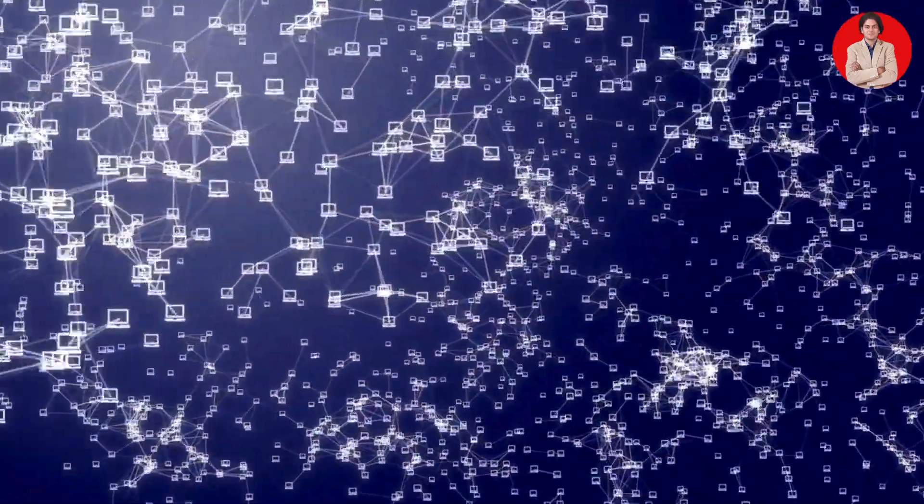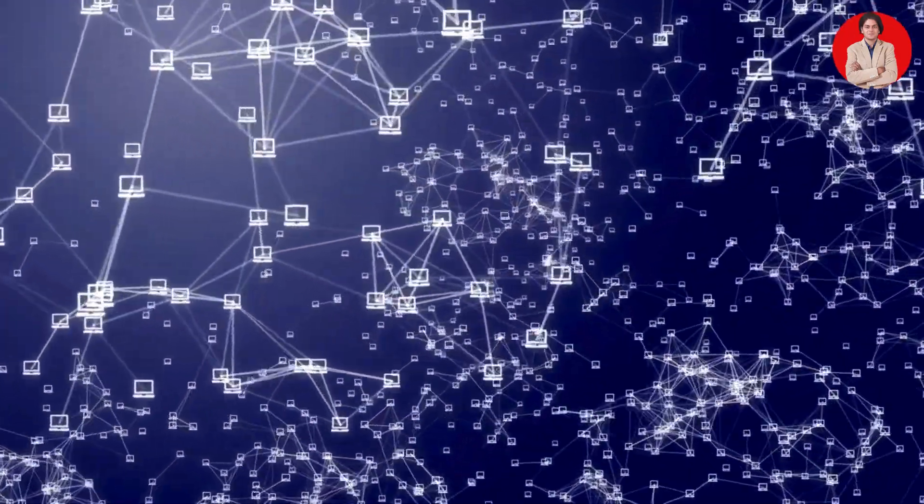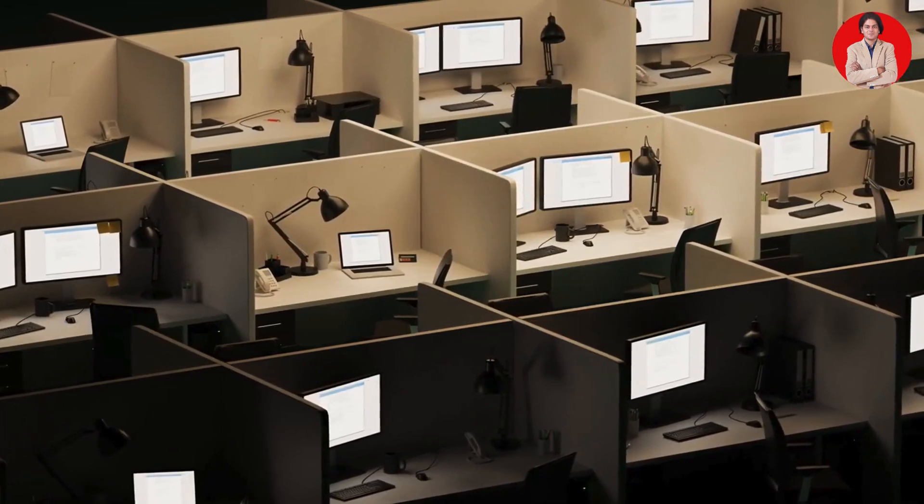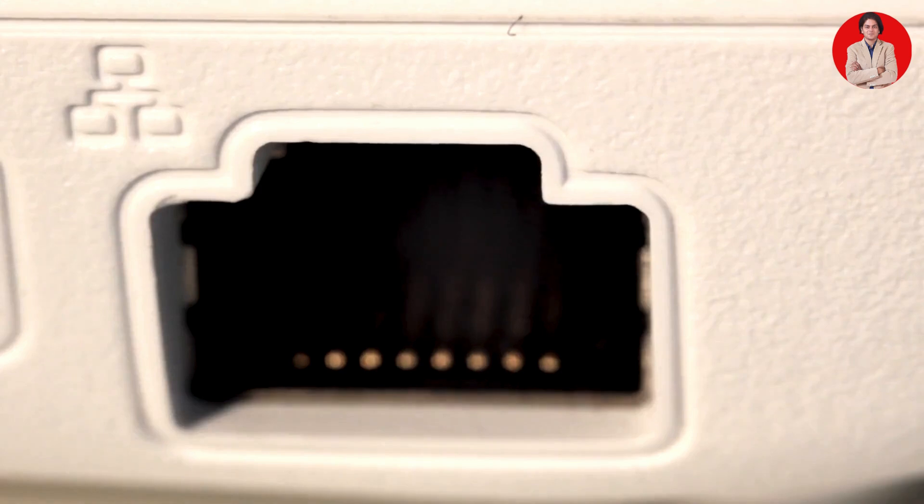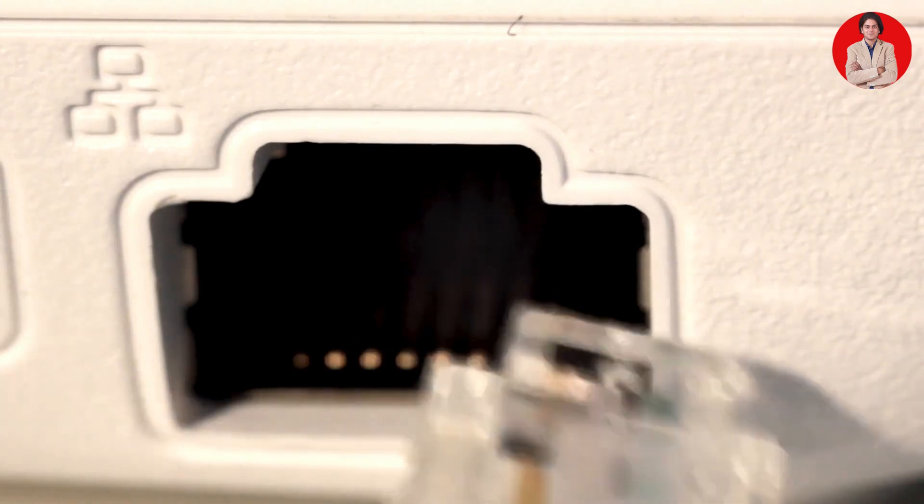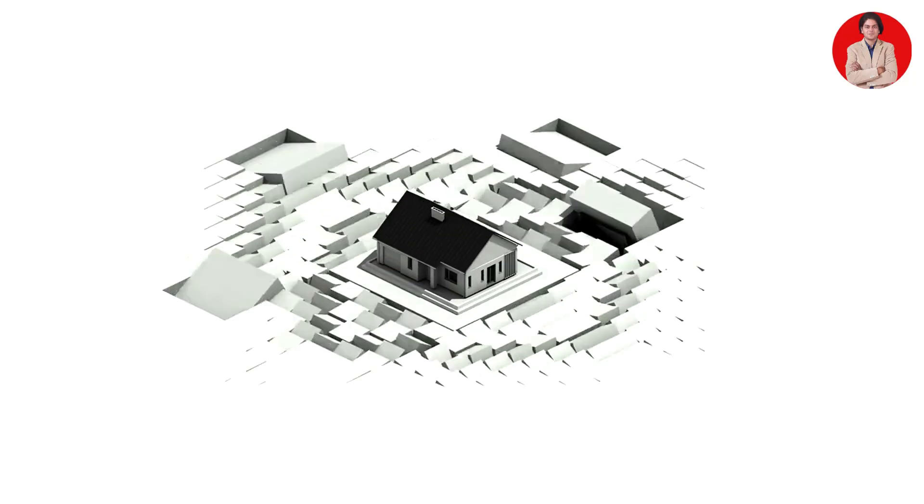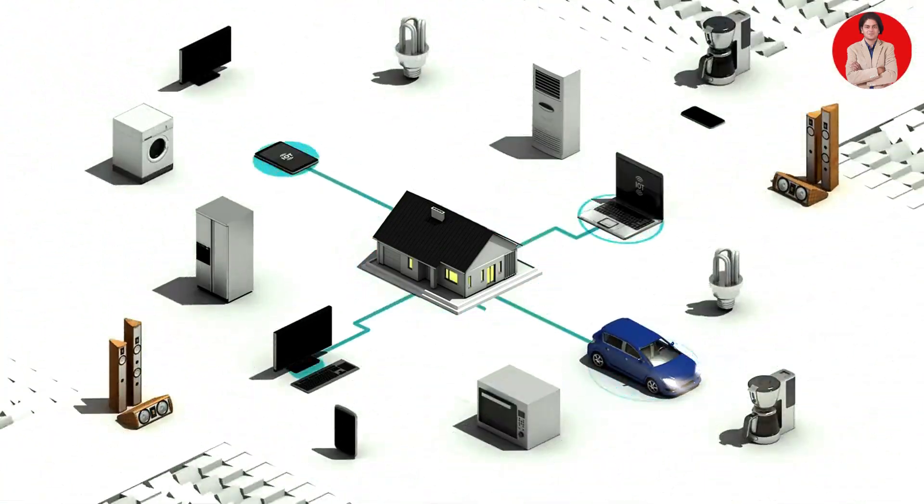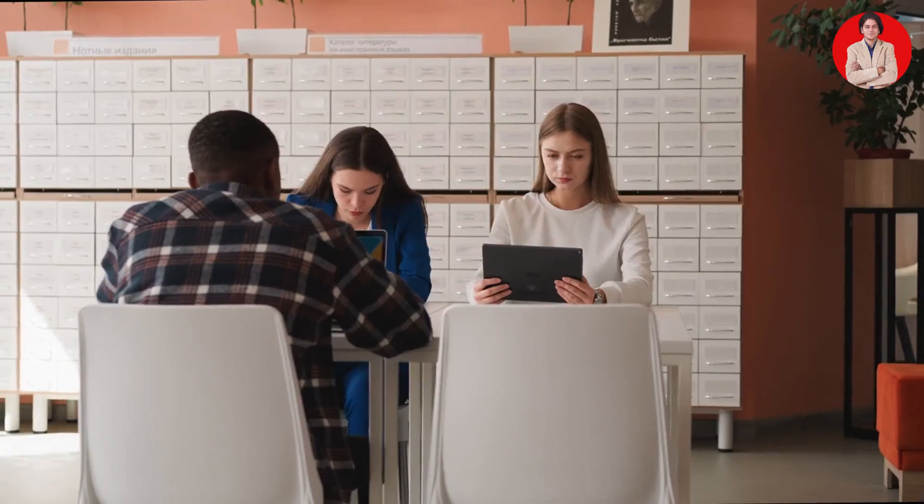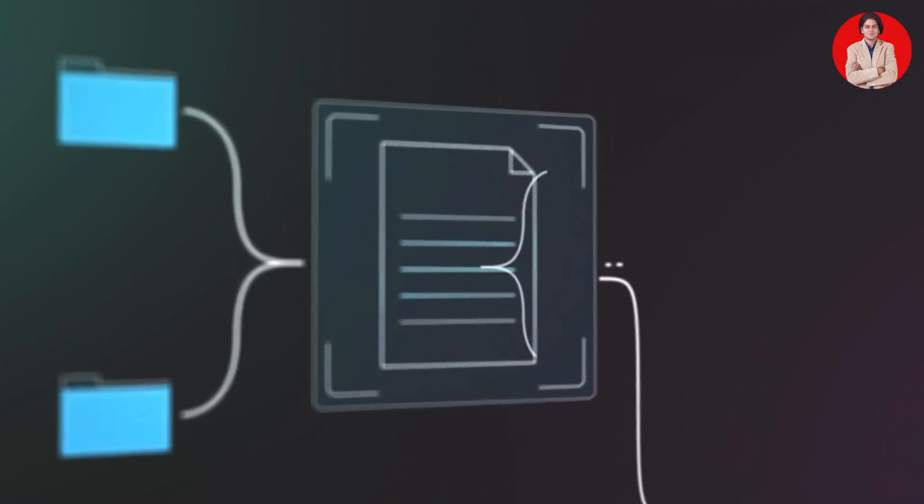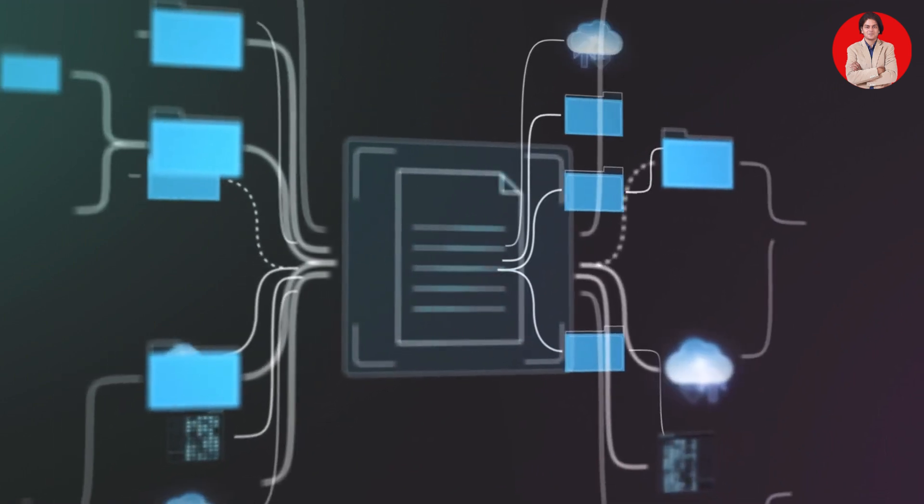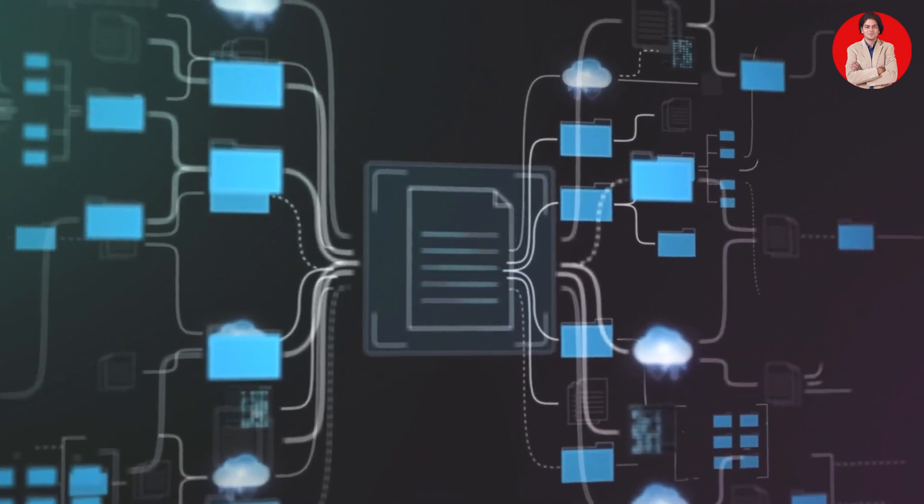Types of networks: Computer networks come in various sizes and configurations, each designed to serve different purposes. Here are some of the most common types. LAN, Local Area Network: A LAN connects devices within a limited geographical area, such as a home, office or school. LANs are typically used to share resources and provide internet access to multiple devices.